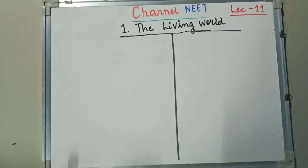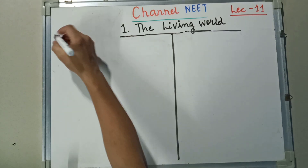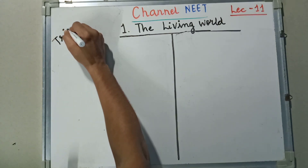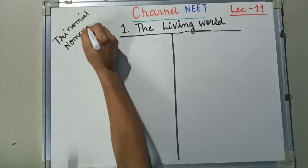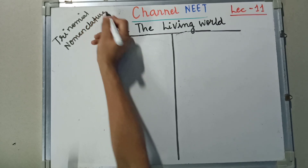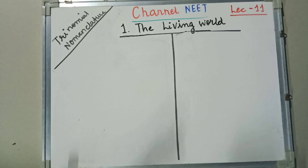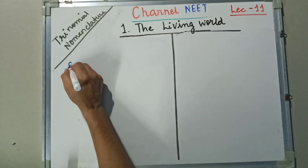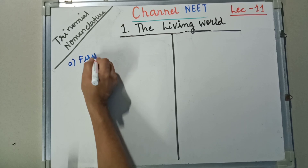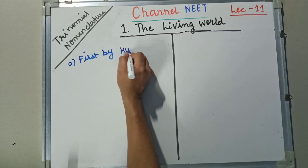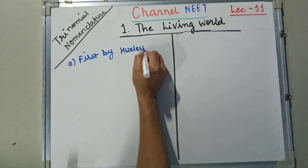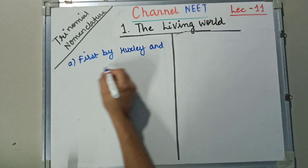Now we are going to start with the concept known as Trinomial Nomenclature. Trinomial Nomenclature was first proposed by Huxley and Strickland. These were the scientists who actually proposed Trinomial Nomenclature.